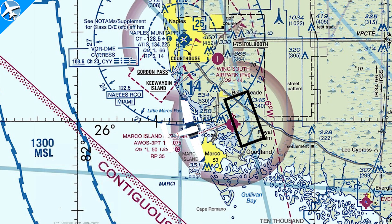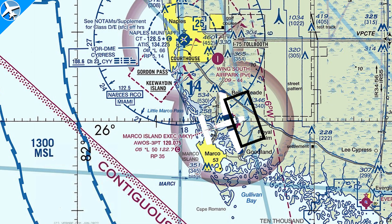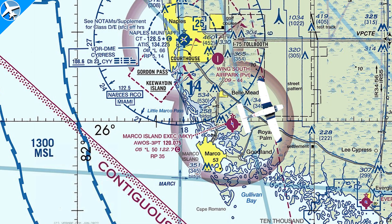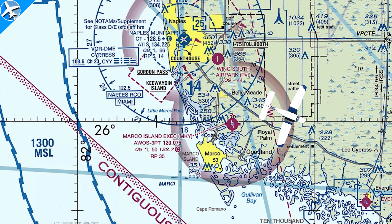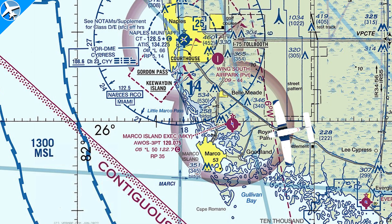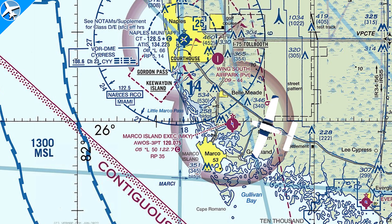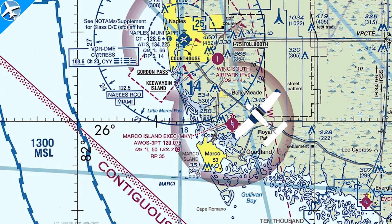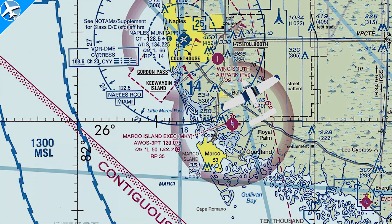As the aircraft approaches the airport, the airplane should be 500 feet above traffic pattern altitude. Once the aircraft has cleared the traffic pattern by approximately 2 miles, a shallow descent should be started down to traffic pattern altitude — in this case, 1,000 feet. Then a right turn is entered to enter the traffic pattern on a 45-degree angle.